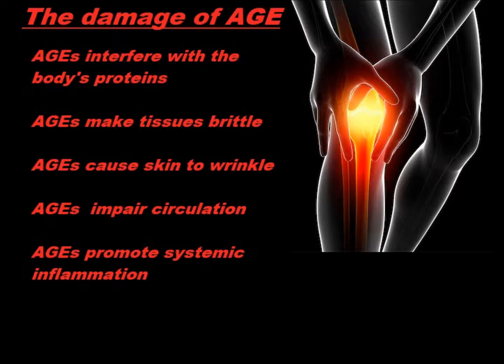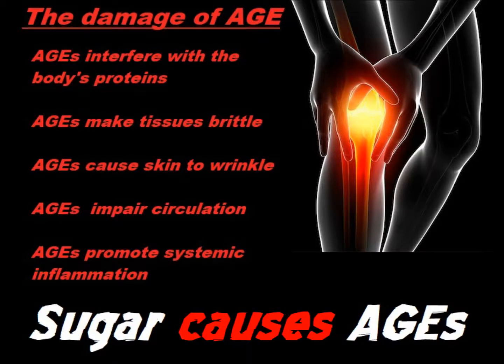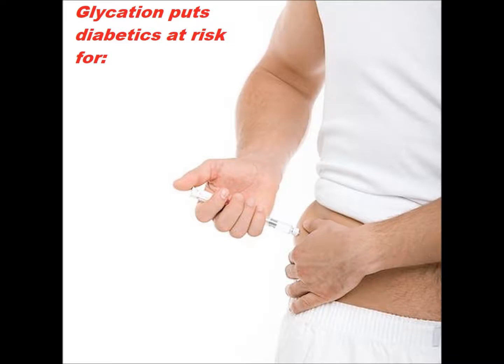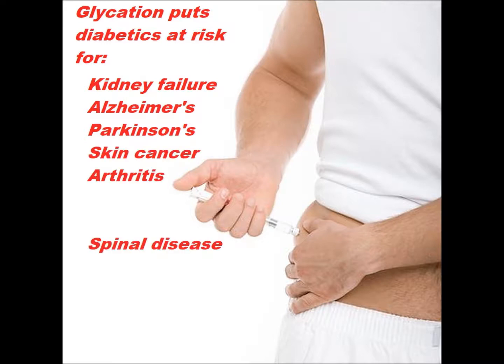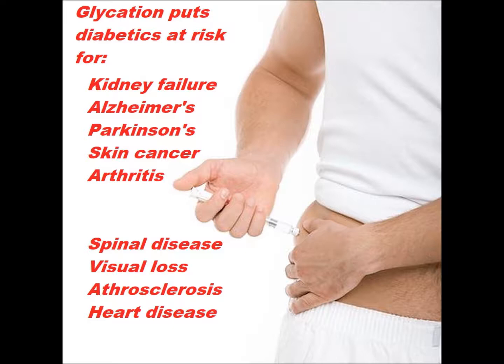Everyone is at risk for the age-accelerating effects of glycation. One reason for this is the overabundance of sugar in the standard American diet. Diabetics' tissues undergo rapid aging and deterioration due to poor glucose control as well. The life expectancy of an individual whose diabetes is not adequately controlled is significantly shortened. In both diabetics and non-diabetics, glycation has been implicated in disorders including kidney failure, Alzheimer's and Parkinson's, skin cancer, arthritis, spinal disease, visual loss, atherosclerosis, and heart disease. New human clinical trials demonstrate that higher accumulations of advanced glycation end products are associated with lower levels of physical activity and decreased reaction time.